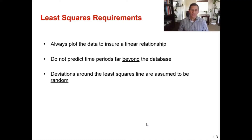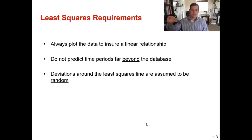The last assumption is that deviations around the least squares line are assumed to be random. You're going to see some deviations, and you assume they're random because the trend line is a series of averages.